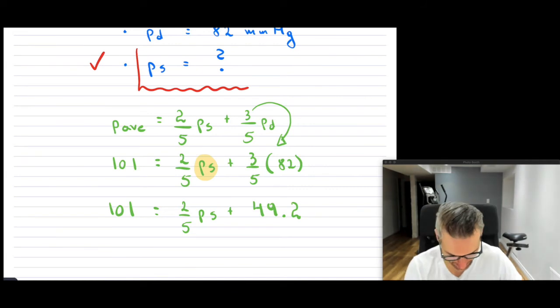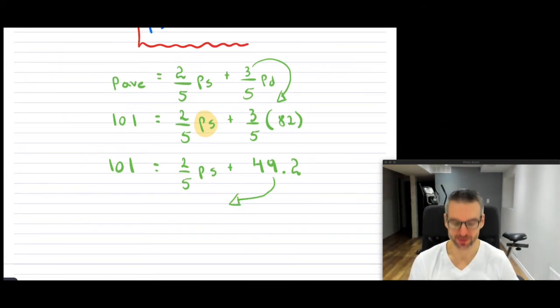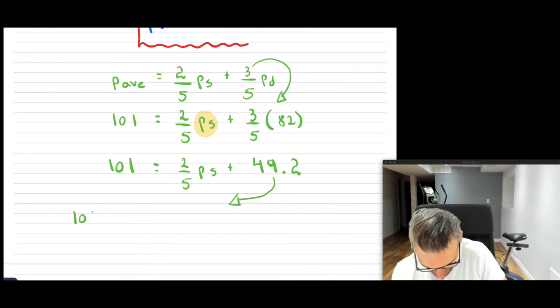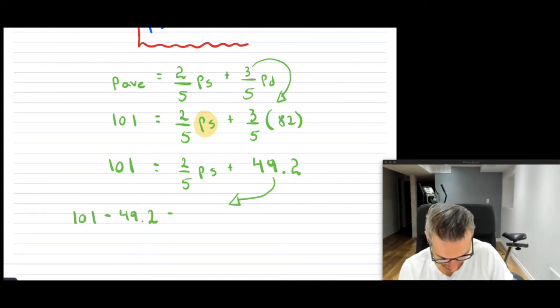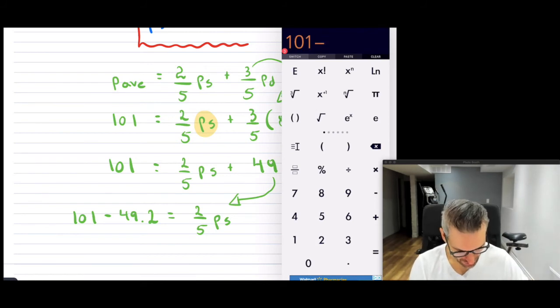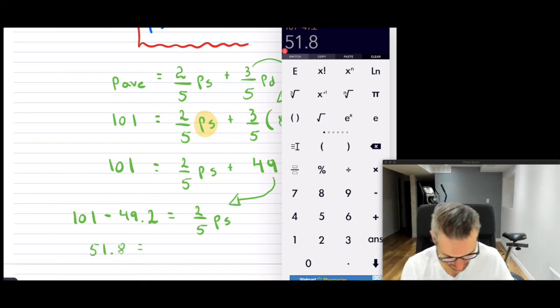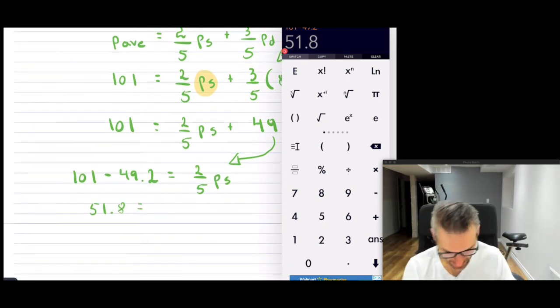This is going to be 101. Now we're going to bring this term over to the other side. So as we bring it over, I'm going to have 101 minus 49.2 equals to 2/5 PS. So 101 minus 49.2, that's going to be 51.8 is equal to 2/5 PS.